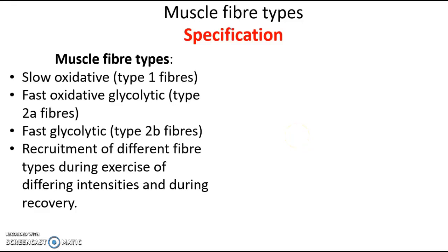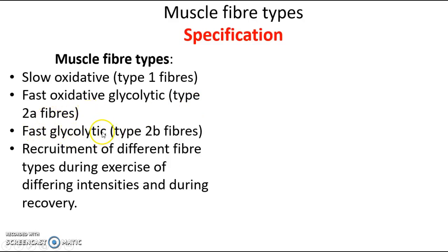Hello and welcome to today's anatomy and physiology topic. We're going to be looking at muscle fibre types. If you have a look at the specification, these are the things you need to know. There are three different muscle fibre types. The first is a slow oxidative type 1 fibre. The second is a fast oxidative glycolytic, which is a type 2a fibre. And then you have a fast glycolytic fibre, which is a type 2b fibre.